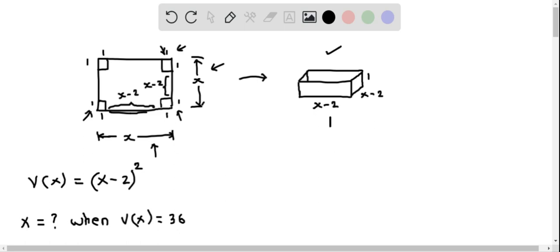Here I have indicated this is the length of the box, this is the width of the box, and this is the height of the box. Using the volume formula of a box, we can write down the volume as length times width times height, and this equals (x-2) times (x-2) times 1, that is, height is 1.